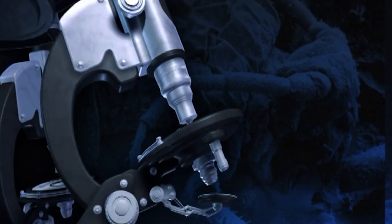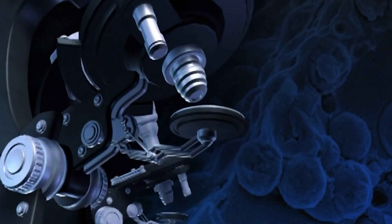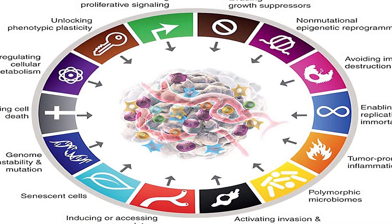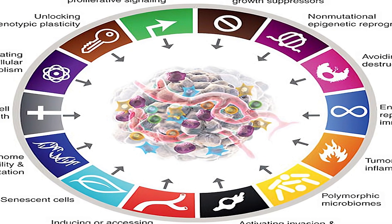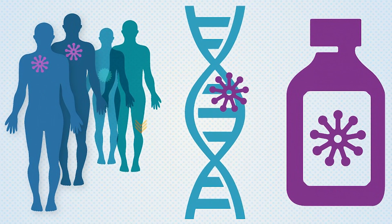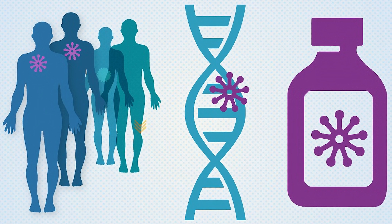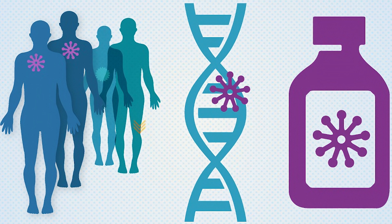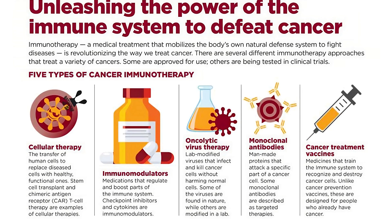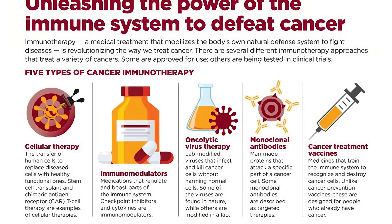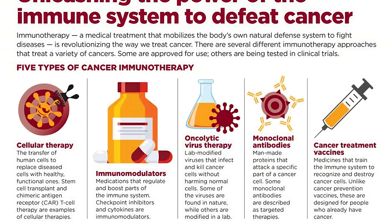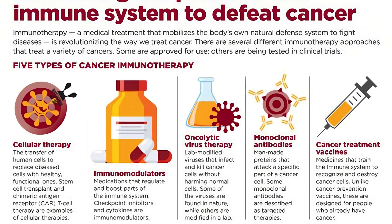Future research in cancer biology is focused on developing more targeted and effective treatments. One approach is to better understand the genetic and molecular mechanisms that underlie different types of cancer, with the goal of developing therapies that specifically target these pathways. Targeted therapy involves drugs designed to target specific proteins or molecules involved in the growth and spread of cancer cells, and may have fewer side effects than traditional chemotherapy. Immunotherapy is a newer treatment that uses medicine to help the body's immune system recognize and attack cancer cells, and is a promising option for some types of cancer, though not effective for all patients.